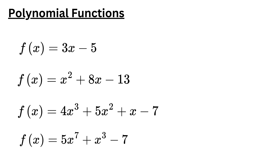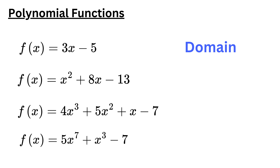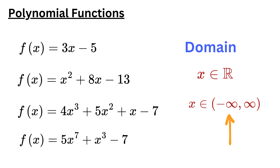Polynomial functions are the easiest case. They do not have anything in the denominator, and they do not place anything under square roots. As a result, polynomial functions are defined for every real value of x. We write it as x belongs to ℝ, where ℝ is all real numbers. In interval notation, this is written as x belongs to negative infinity to positive infinity. We can write it in either of these ways.